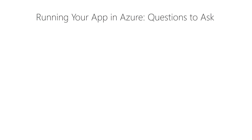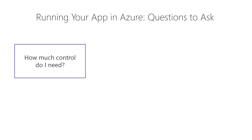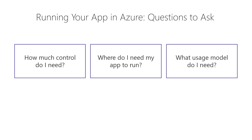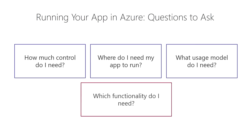When running your application in Azure, the first thing I do is ask a couple of big picture questions. The first one is: how much control do I need — do I need control over the load balancers? The second is: where do I need my app to run? The third is: what usage model do I need? Answering these narrows down the services I can pick from, and then I match requirements to functionality.